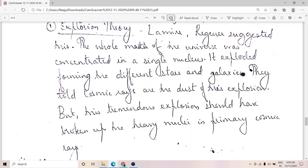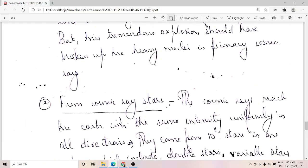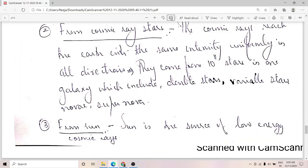But if the cosmic rays were created in such a tremendous explosion, it should have broken up the heavy nuclei too. But we find that primary cosmic rays contain a small percentage of heavy nuclei also. That means the explosion theory is not completely correct. Next is that the cosmic rays have their origin from cosmic ray stars. The cosmic rays reach the earth with the same intensity uniformly in all directions, meaning they can be coming from the 10^11 stars present in our galaxy which include double stars, variable stars, novae, supernovae, etc.